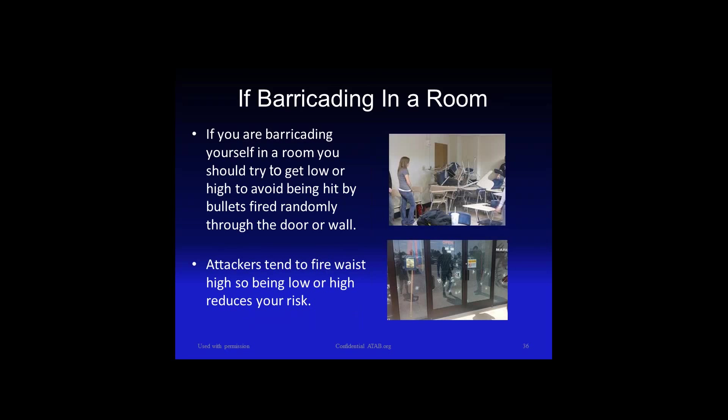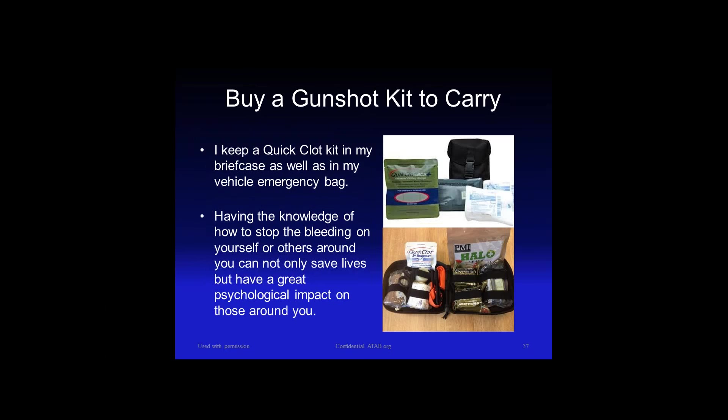When barricading in a room, stay higher and low simultaneously because they're going to be shooting through the wall and door. The bottom picture is from Chattanooga — you can see all the bullet holes where the shooter modified his car to shoot at people and buildings without even getting out. Because people tend to fire at the waist area, being lower reduces the risk.